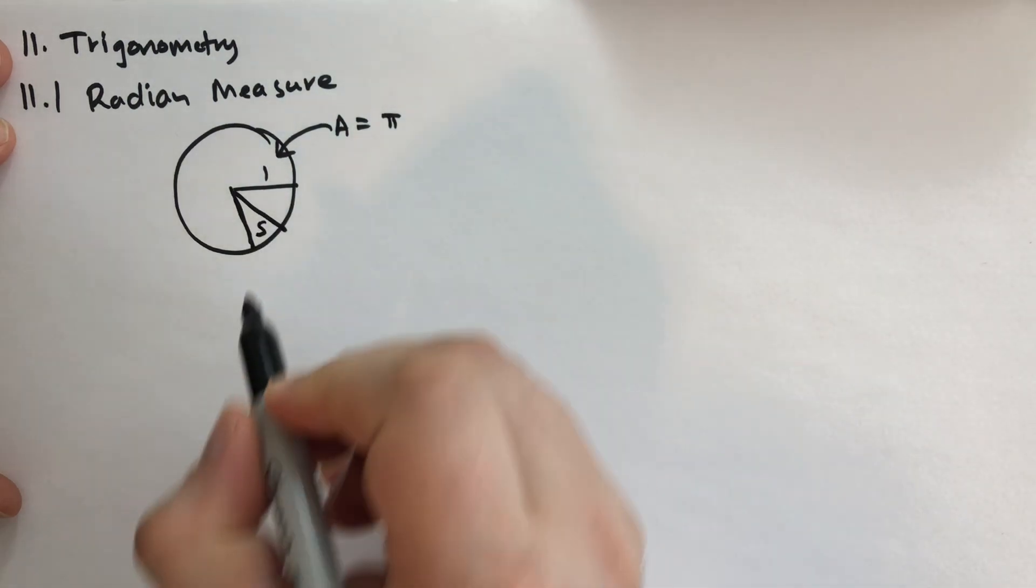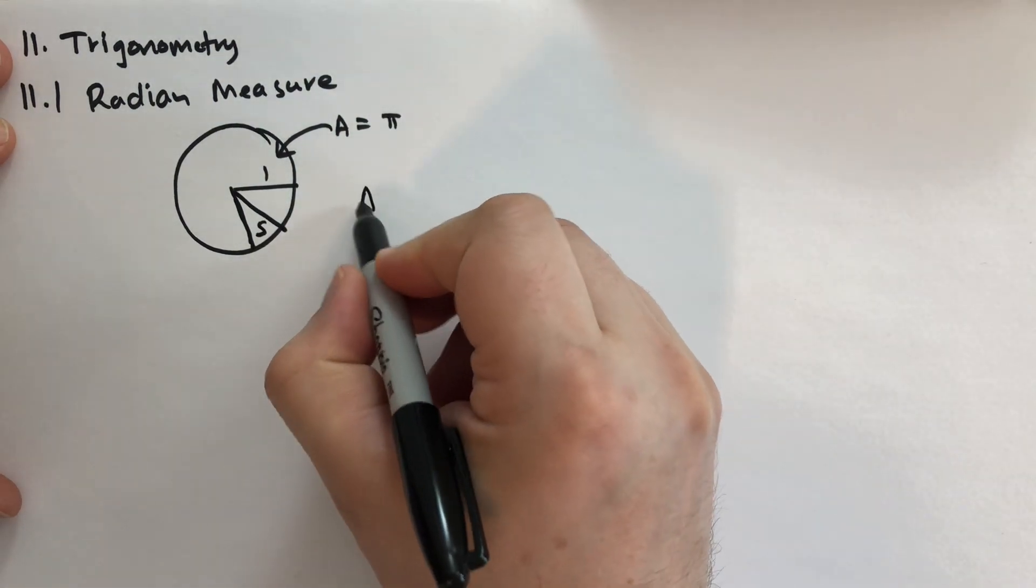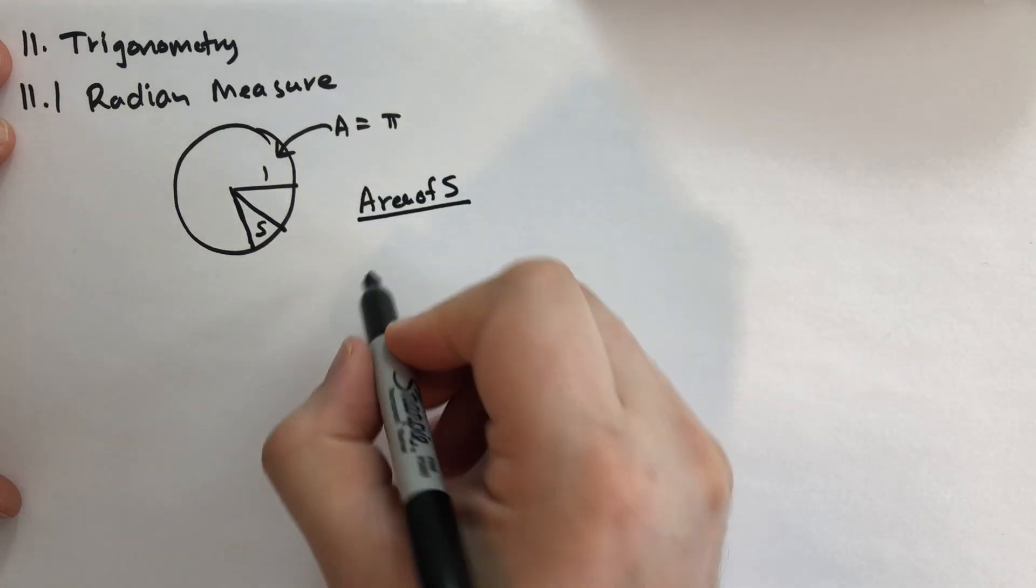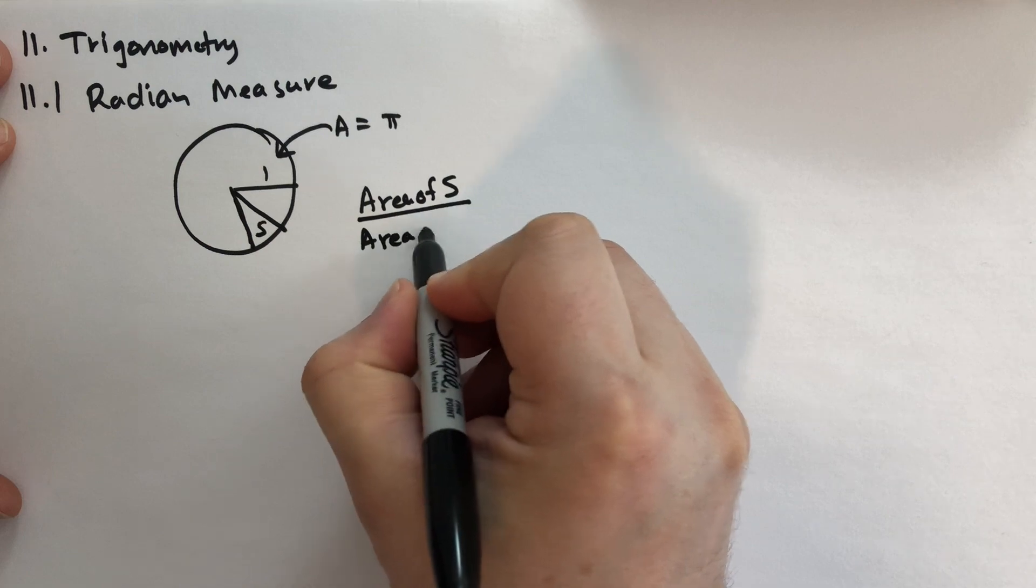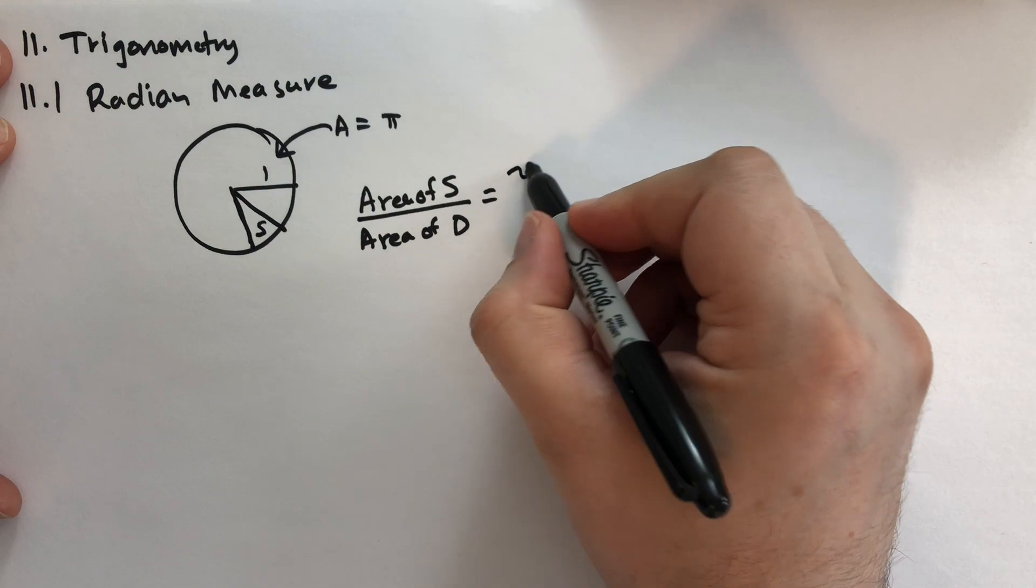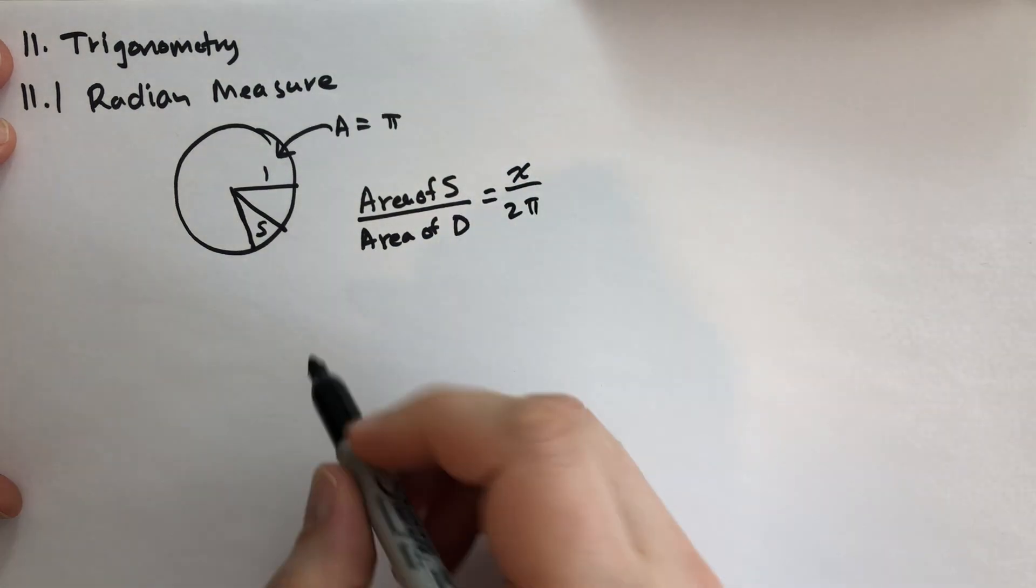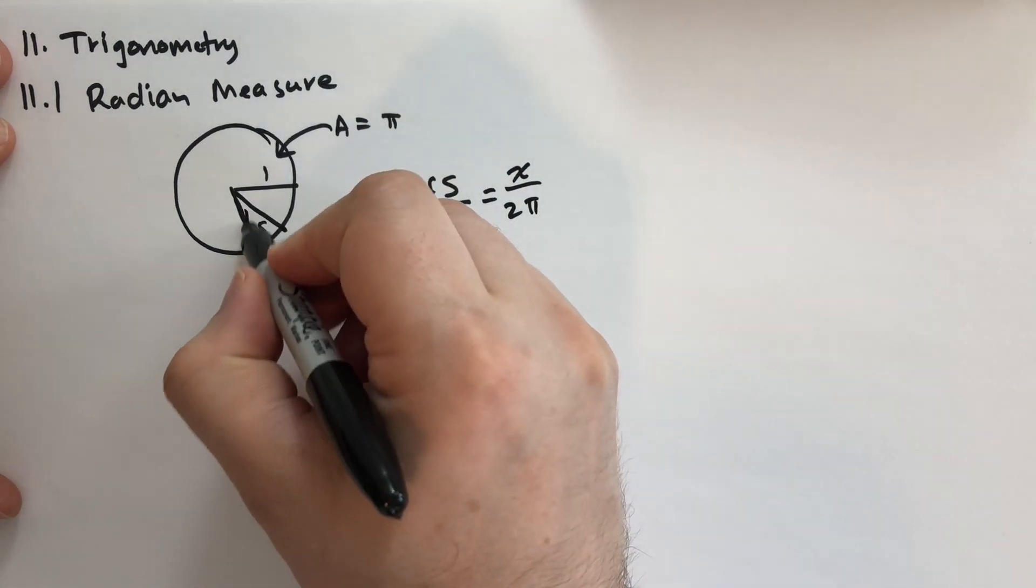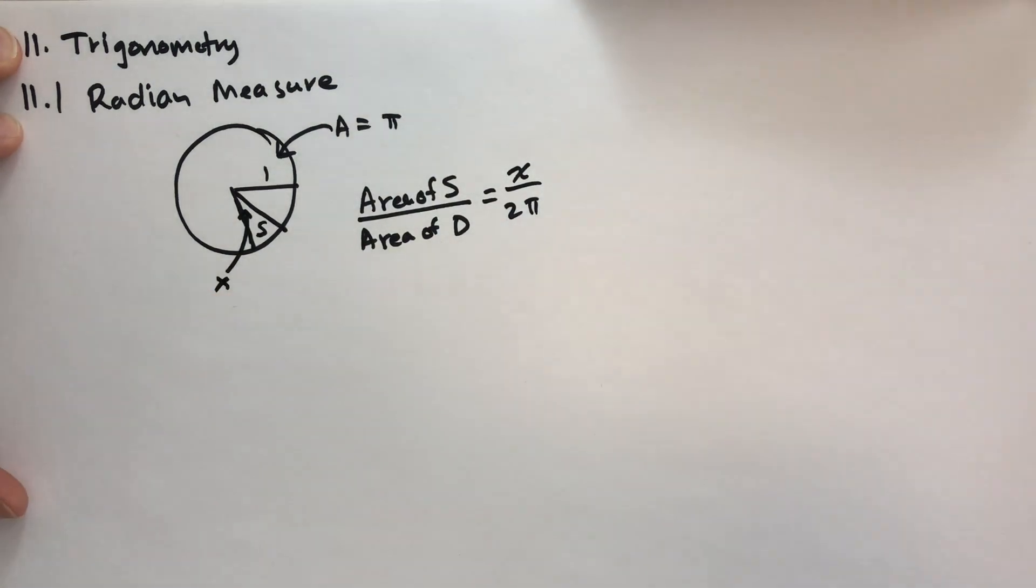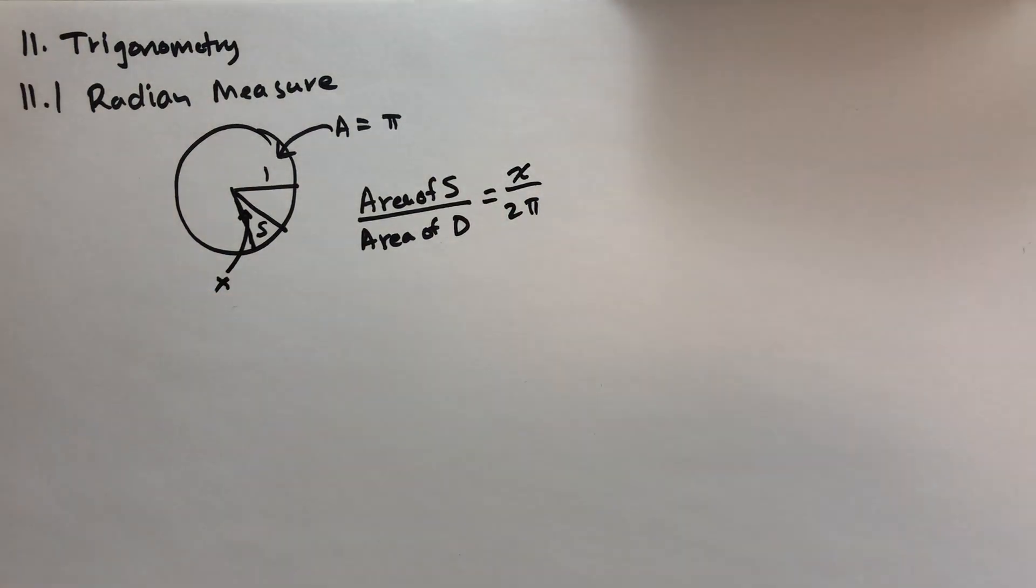And we're going to call that, so if we have S here, I'm going to say the area of S over the area of the entire disc, D, that's going to be equal to X over 2 pi. And so that angle X is that angle measured in radians. That's how we measure this. It's a very natural system.